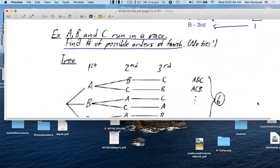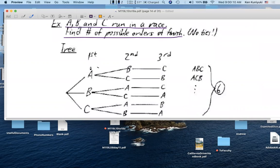Here's a possibility tree. There are three possibilities for first place. And regardless of who comes in first, there are two possibilities for second place. And regardless of who comes in first and second, third place is forced. It's the remaining person.